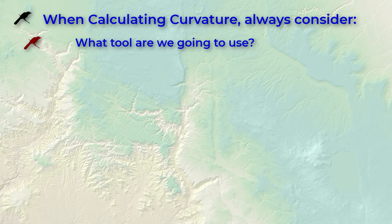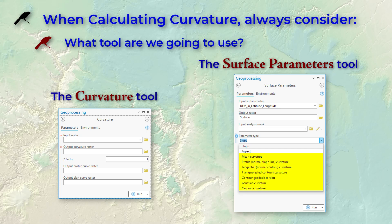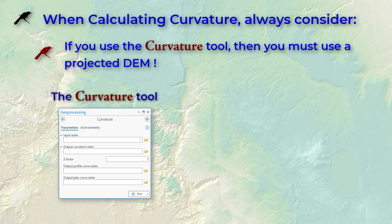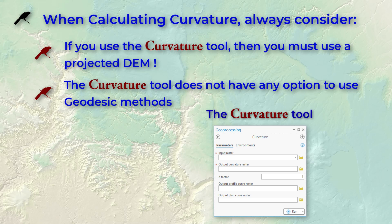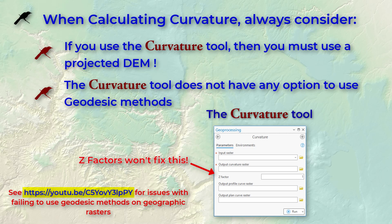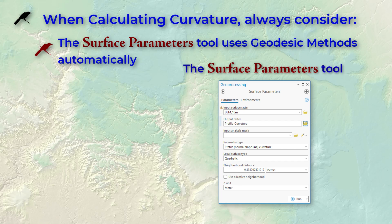Before we start, there are a few things you should always consider when calculating curvature. First, which tool are you going to use? Currently ArcGIS Pro has two tools that calculate curvature: the curvature tool and the surface parameters tool. If you're using the curvature tool, you must use a projected DEM. As of October 2024, the original curvature tool has no option for using geodesic methods, so your curvature values will not be correct if you're using a geographic DEM, and setting a z factor will not fix this problem. If you're using the surface parameters tool, you don't need to worry about the coordinate system — it will automatically use geodesic methods regardless of what coordinate system your DEM is in.